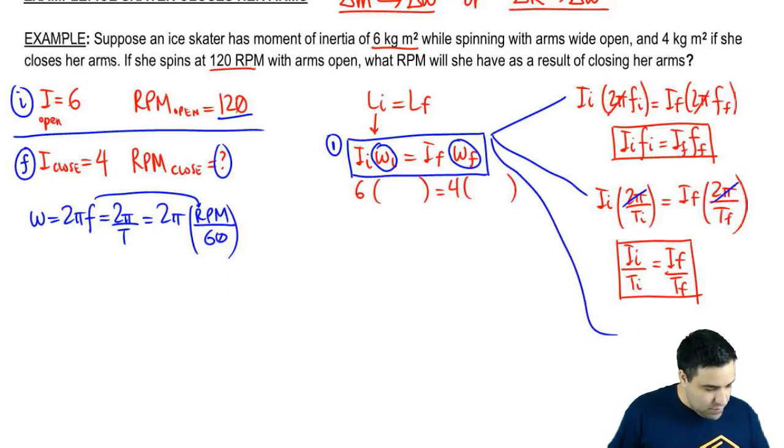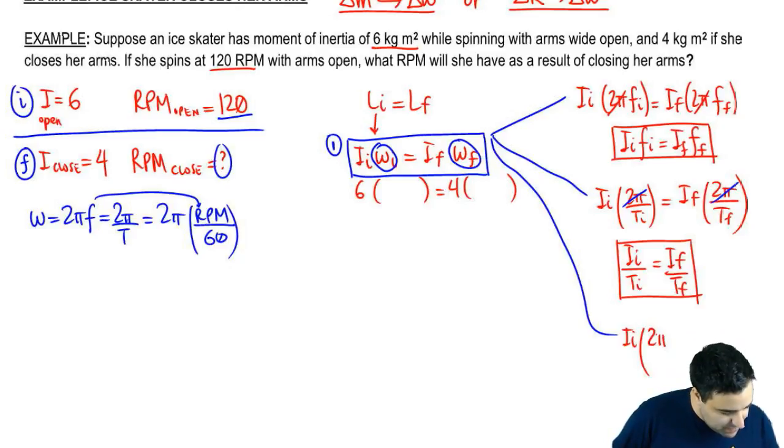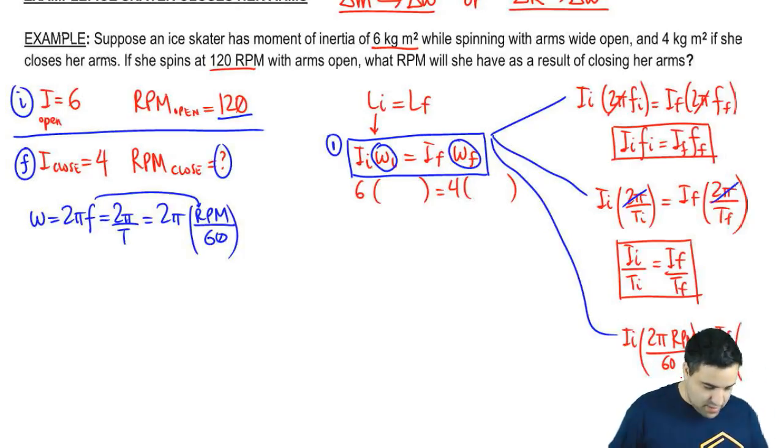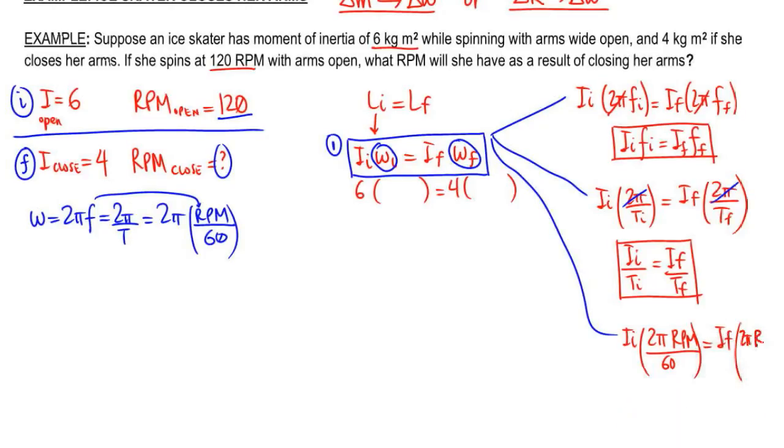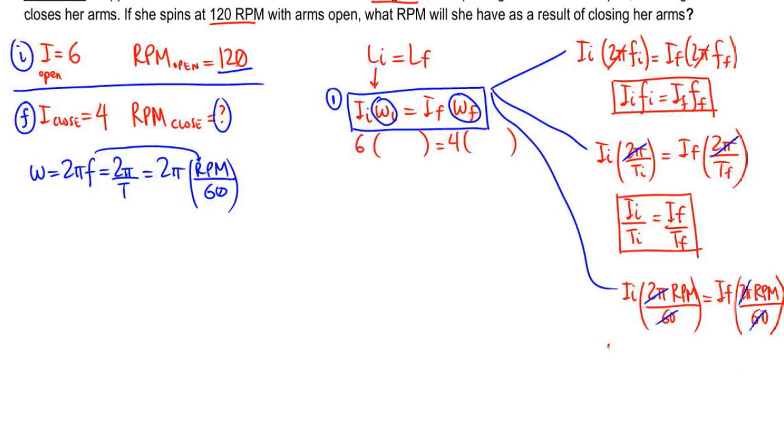We can say I initial, now instead of 2π f, we're going to use 2π RPM over 60. So 2π RPM over 60 equals I final 2π RPM over 60. And look what I can do here. I can cancel the 2π's and the 60. And you're left with I initial RPM initial equals I final RPM final.